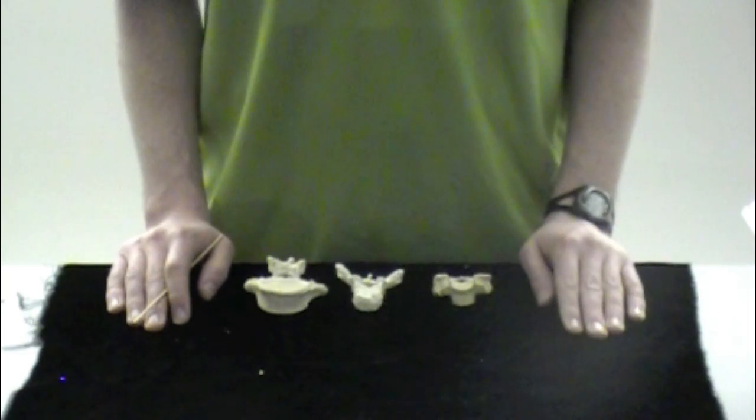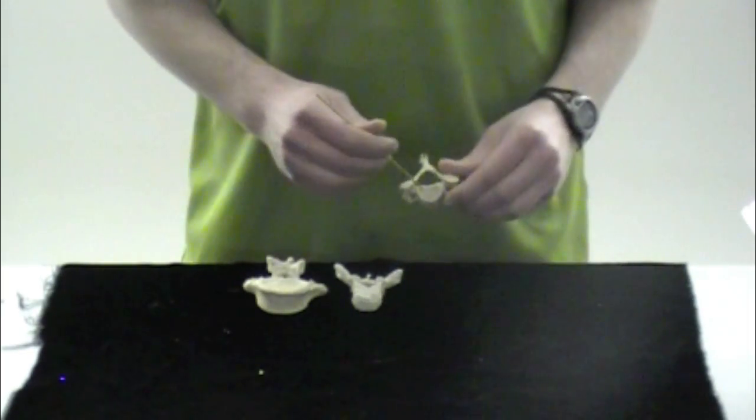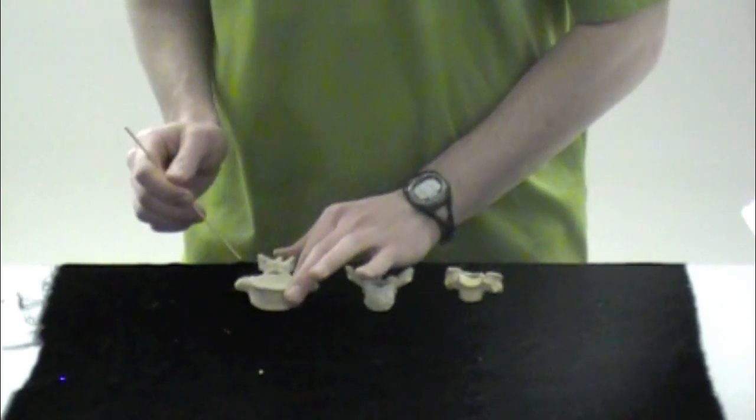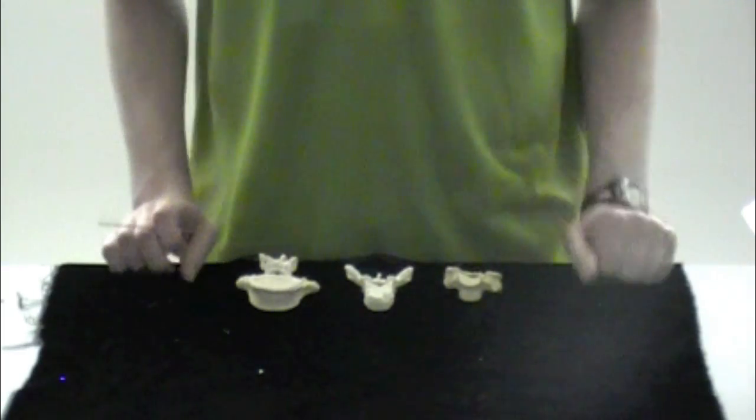Now we're going to go over the structures on each vertebrae. Starting with your vertebral body, you can see it here, here, and here. Here we have a cervical vertebrae, a thoracic vertebrae, and a lumbar vertebrae, just to clarify.